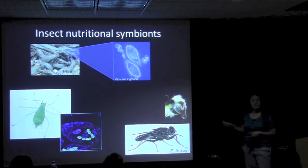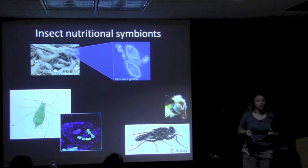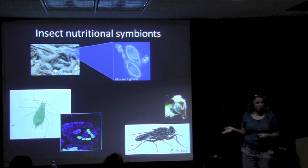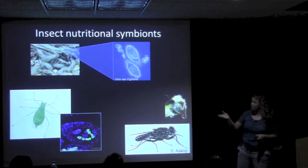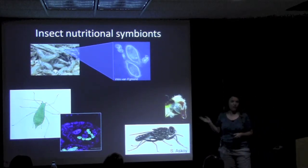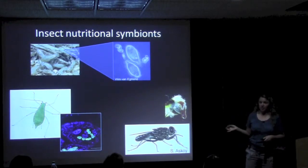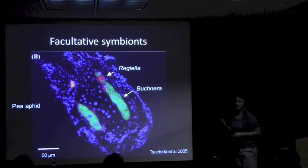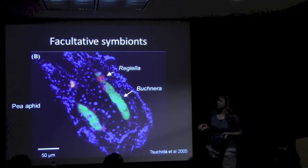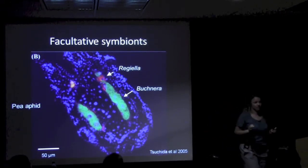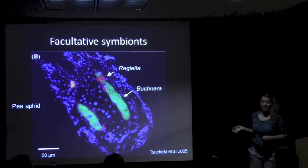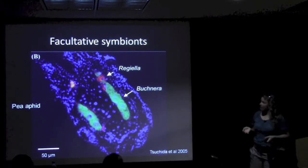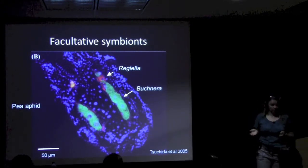All of these interactions are obligate in both directions — the microbe is dependent on the insect host for an environment, and the host in return is essentially dependent on the organism. They cannot really survive and reproduce to any great degree if those symbionts are removed. My interest actually lies within a different category: facultative symbionts, meaning they're not obligate from the host's perspective. Some insects have the bacteria, some do not, and those that are lacking tend to be just fine, by and large.